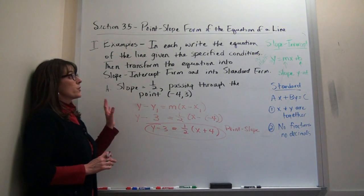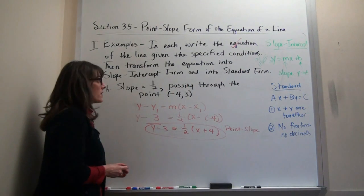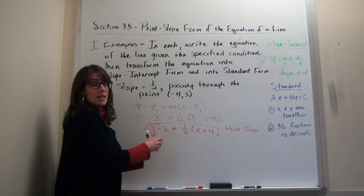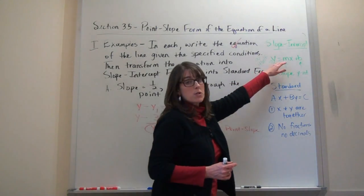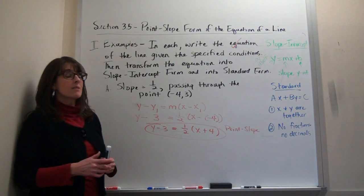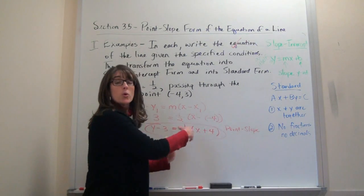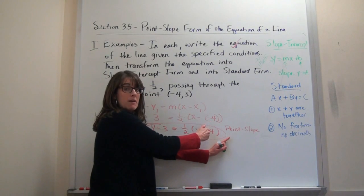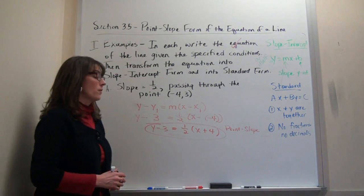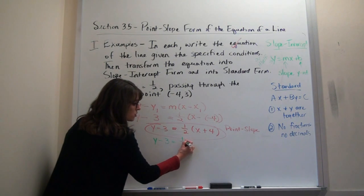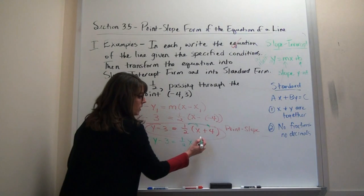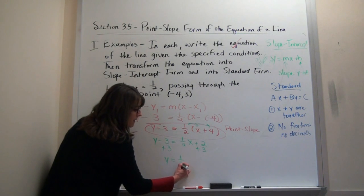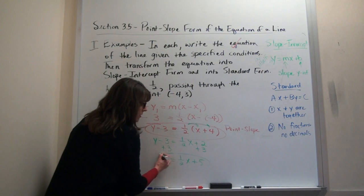Now let's transform this into slope-intercept form, which means get the y by itself with no parentheses. I'll distribute first: one half times x is one half x, and one half times 4 is 2. So y minus 3 equals one half x plus 2. Then I add 3 to both sides to get y by itself: y equals one half x plus 5. The y is by itself and there are no parentheses — that's slope-intercept form.